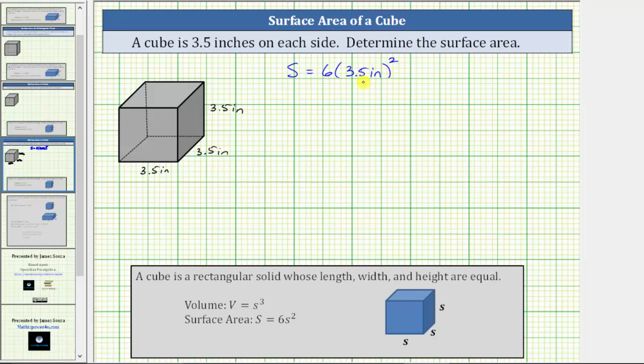Notice here I did leave the units in the length of the side to emphasize the units of the surface area will be inches squared or square inches. But often the units are left off until the very end, and the surface area is written as S equals six times 3.5 squared.